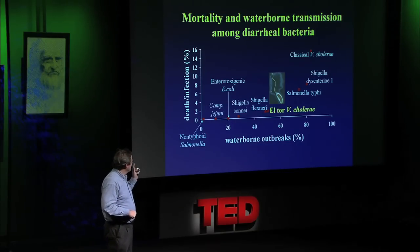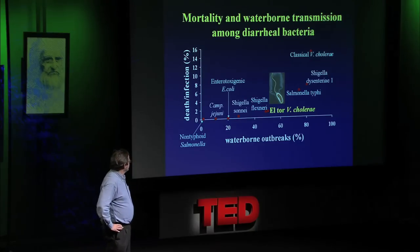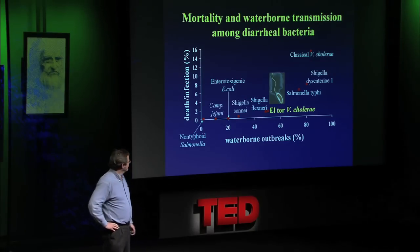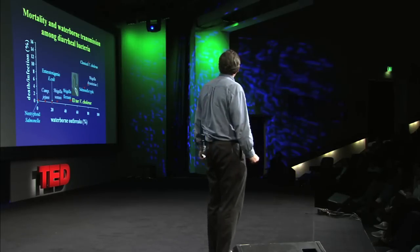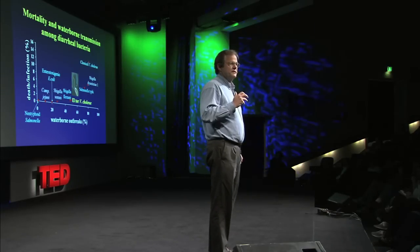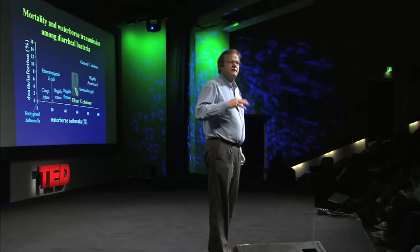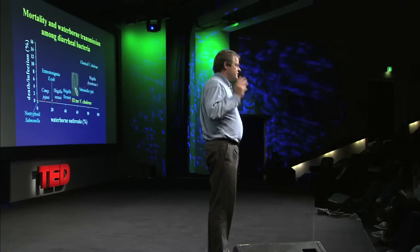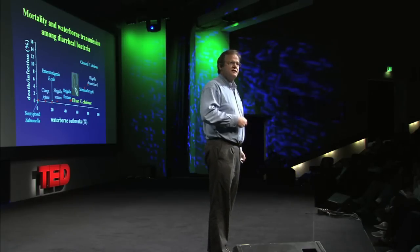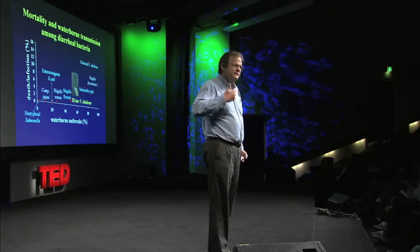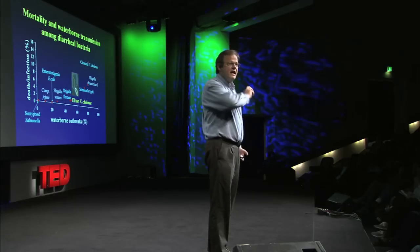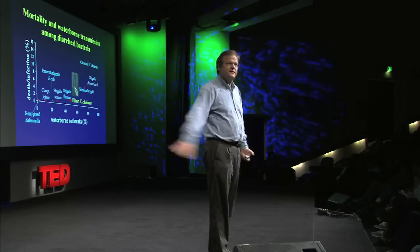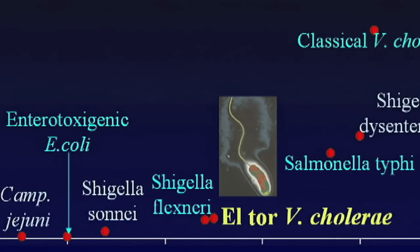I focused on the El Tor biotype of Vibrio cholerae — the species responsible for causing cholera. It's a great organism to examine because we understand why it's so harmful: it produces a toxin. That toxin is released when the organism gets into our intestinal tract, causing fluid to flow from the cells lining the intestine into the intestinal lumen. That fluid then goes out the other end, flushing out thousands of competitors that would otherwise make life difficult for the Vibrios.